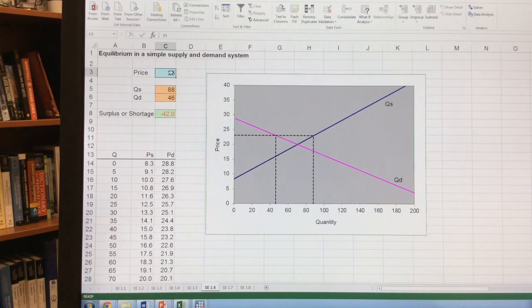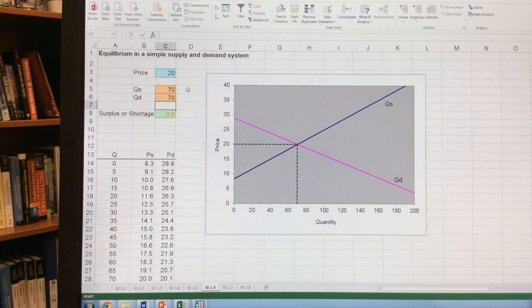So we'll do 23, almost there, 22. Getting closer, our surplus is 28, and now it's 14. Once I get 20, you'll notice quantity supplied equals quantity demanded. Therefore, we have a surplus or shortage of 0. We've solved the equilibrium of this system of equations.